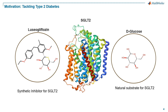This transporter facilitates glucose reabsorption in kidneys. In contrast, luciogliflozin, which is a synthetic compound, is designed to inhibit SGLT2, thereby reducing glucose reabsorption and promoting its excretion in urine. The structural modifications in luciogliflozin allow it to effectively bind and block this transporter, highlighting the importance of molecular design in therapeutic interventions for diabetes management.